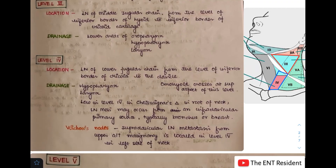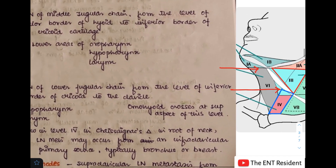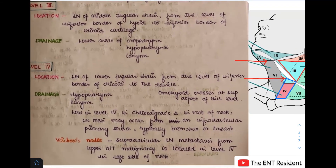Level 3 forms the middle part of the jugular chain of lymph nodes, extending from the level of the inferior border of the hyoid to the inferior border of the cricoid. As seen in the picture, this part marked in red is level 3, continuing from the hyoid bone to the cricoid cartilage. It drains mostly the lower areas of the oropharynx, the hypopharynx, and the larynx.